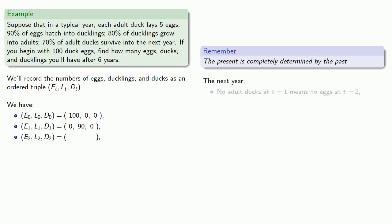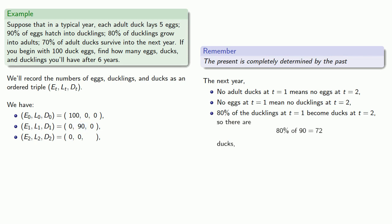The next year, no adult ducks at t equals one mean no eggs at t equals two. No eggs at t equals one mean no ducklings at t equals two. 80% of the ducklings at t equals one become ducks at t equals two. So there are 80% of 90, 72 ducks. Now we know that 70% of the ducks at t equals one will survive until t equals two, but since there are no ducks at t equals one, these won't add any to our total.